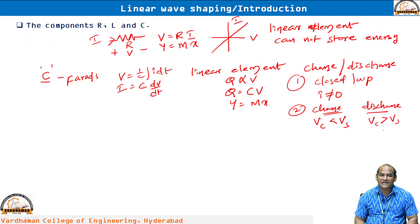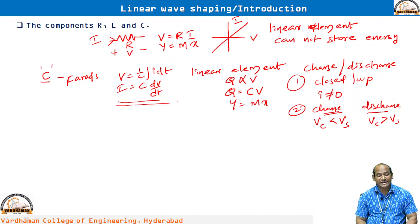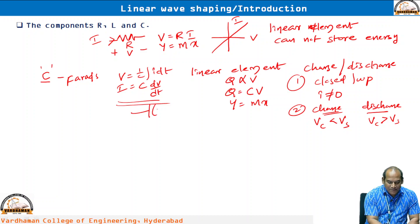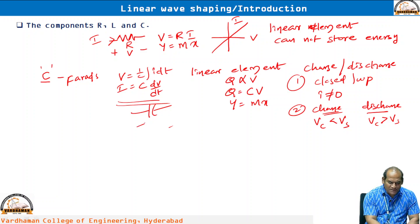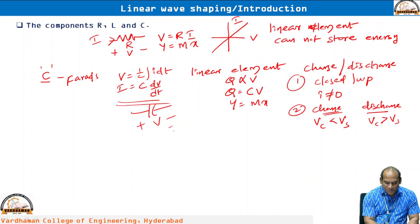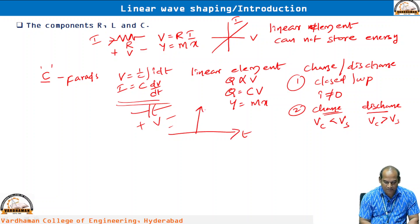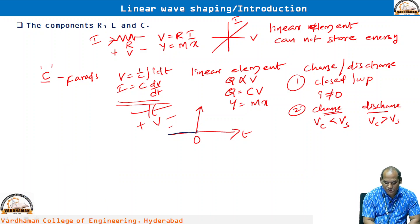A very important point: capacitor does not allow sudden changes in voltage. From the current-voltage relationship, current i equals C into dv/dt. For example, if we apply a step voltage to the capacitor — where voltage suddenly increases from 0 volts to 5 volts at t equals 0 on the time axis — the capacitor cannot charge immediately.